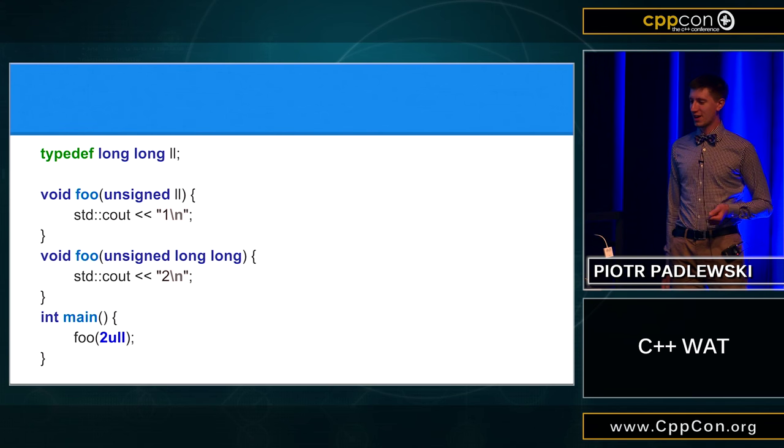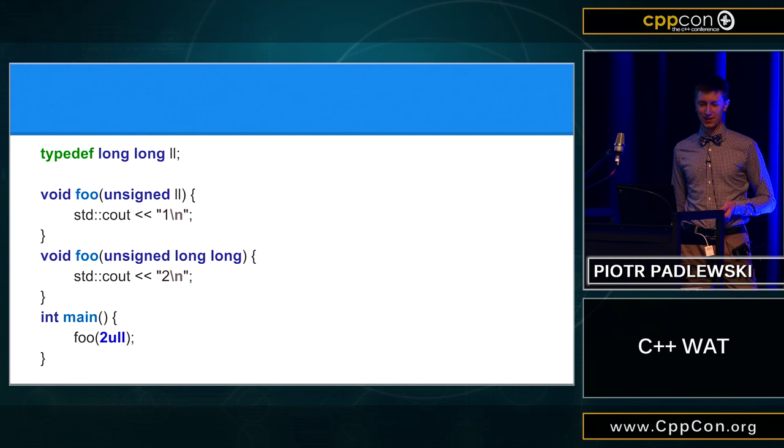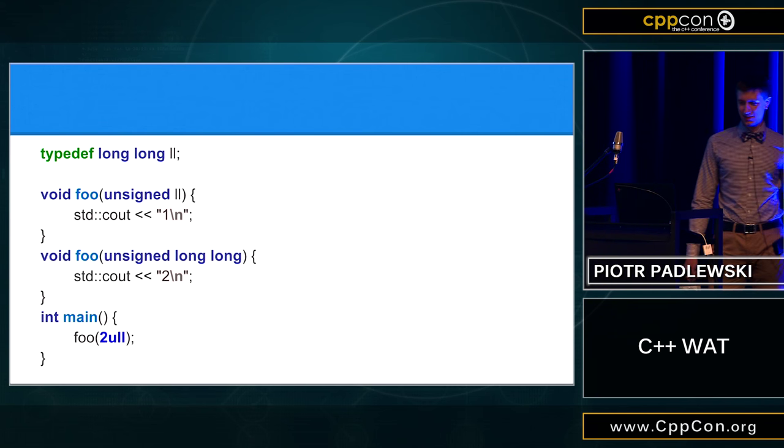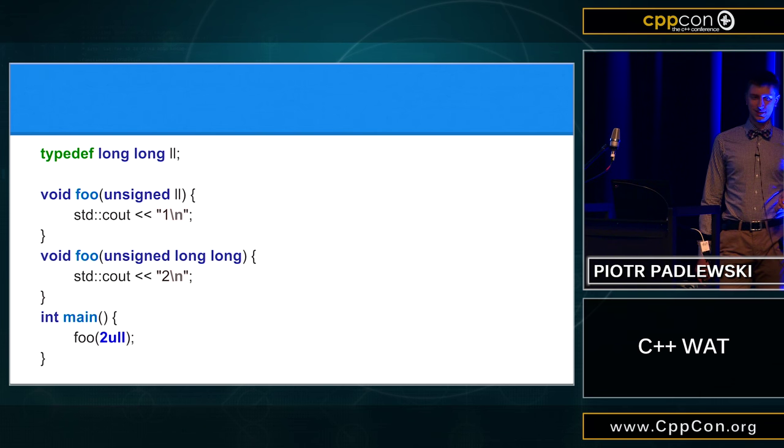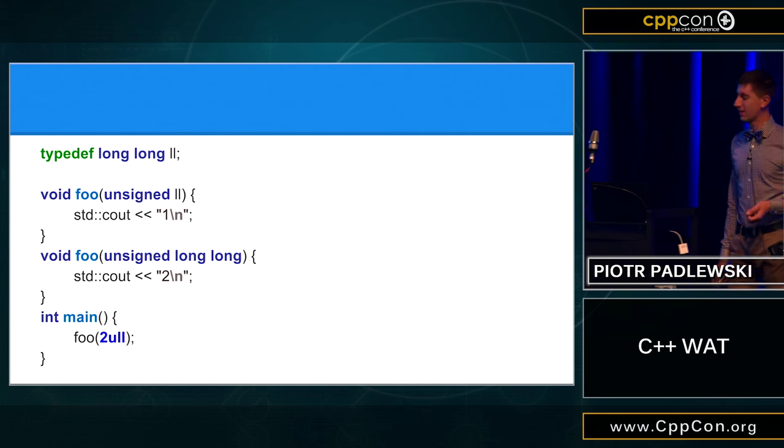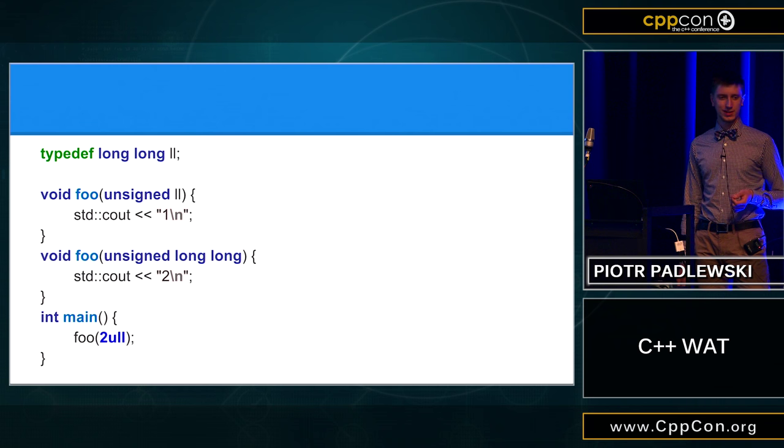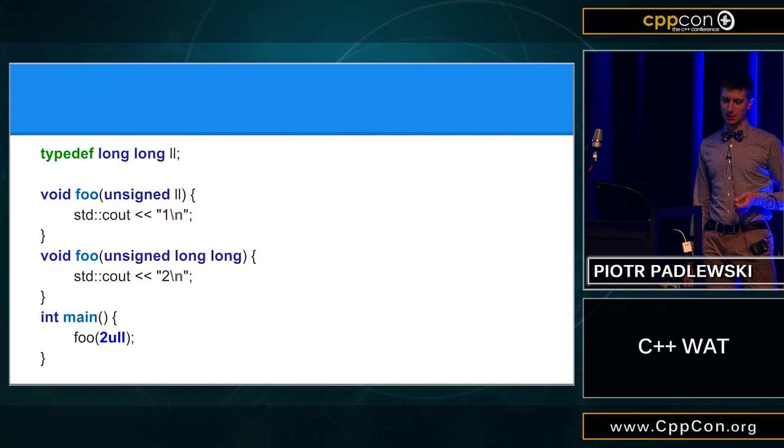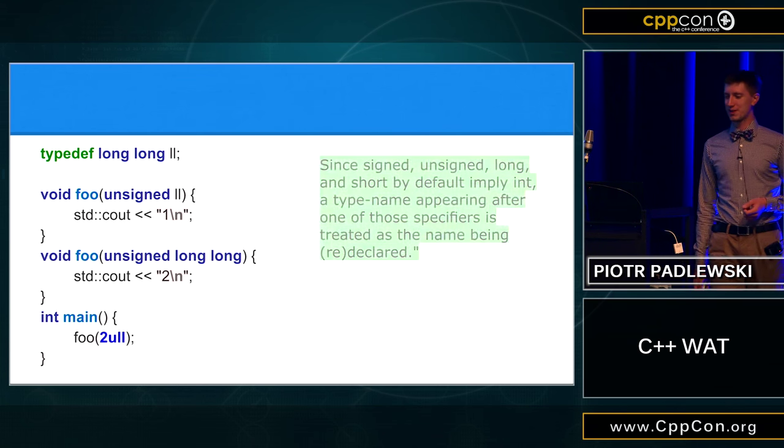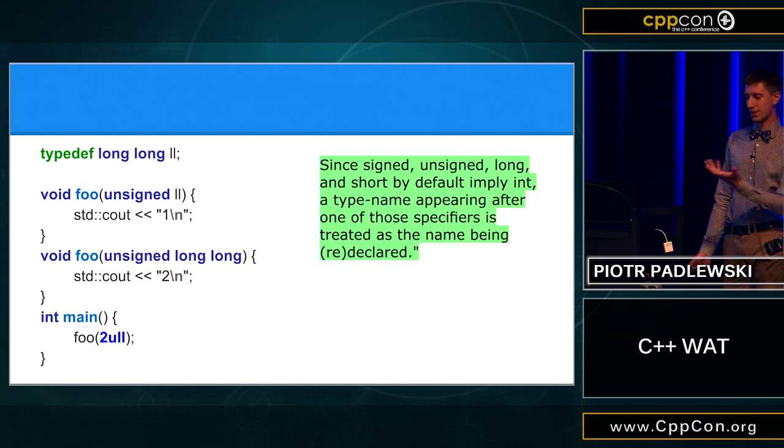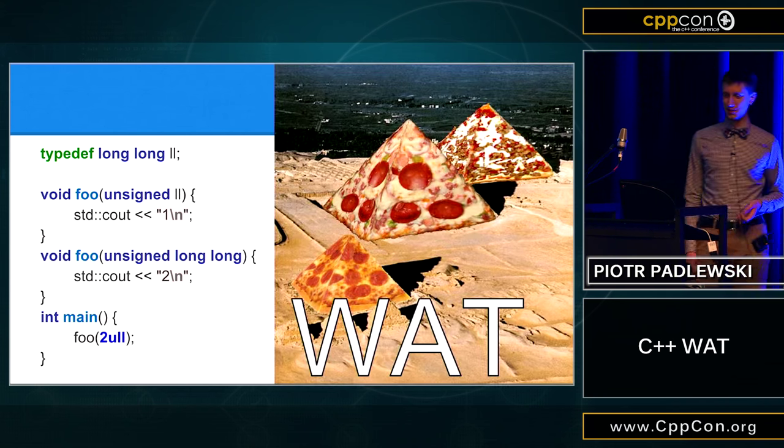Okay. So, in this example, we have a typedef, long long ll. We have two functions. First, that takes something by unsigned ll. And second, that takes unsigned long long. And then we call function with 2ull. And you will probably think that this function, this thing will not compile, because we have the same signatures. Right? And the fact is that it will call the second function, and everything will compile. And this is because you cannot glue types like this. After unsigned, the ll is only a variable name. So, what?